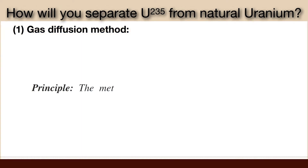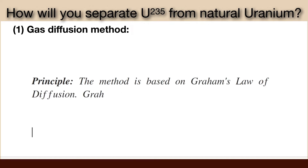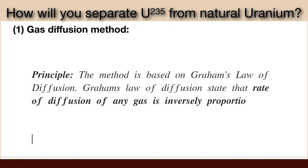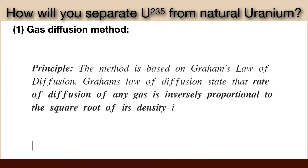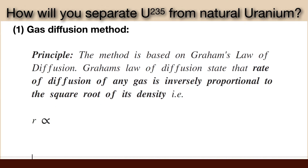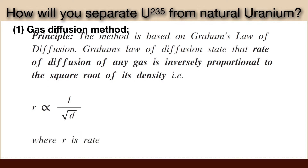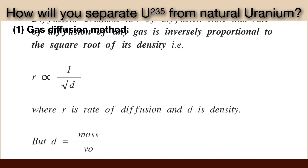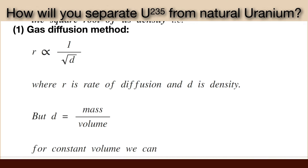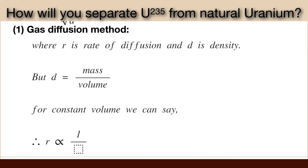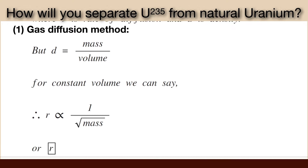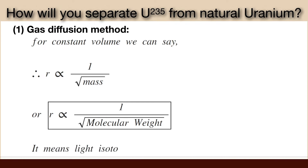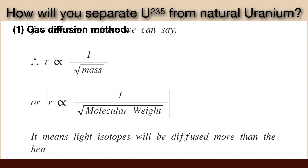The principle of the method is that it is based on Graham's law of diffusion. Graham's law of diffusion states that the rate of diffusion of any gas is inversely proportional to the square root of its density. That is, r is proportional to 1 by square root of d, where r is rate of diffusion and d is density. Since density d is given by mass per unit volume, for constant volume we can say r is proportional to 1 by square root of mass, or 1 by square root of molecular weight. This means light isotopes will diffuse more than the heavy isotopes.